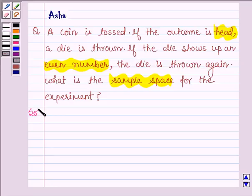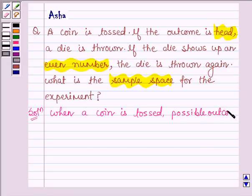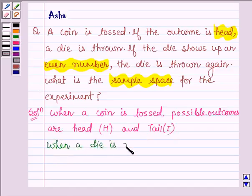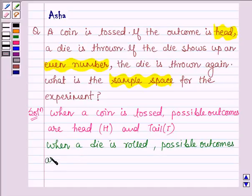Let's now start with the solution. When a coin is tossed, possible outcomes are either head or tail. Let us denote the head by H and tail by T. And when a die is rolled, the possible outcomes are 1, 2, 3, 4, 5 and 6.